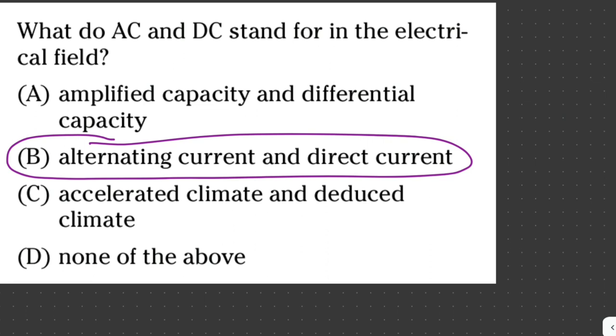Current is the flow of charged particles. The difference between AC and DC is that the electrons in AC circuit regularly reverse their direction, while in a DC circuit, the electrons always flow in the same direction.